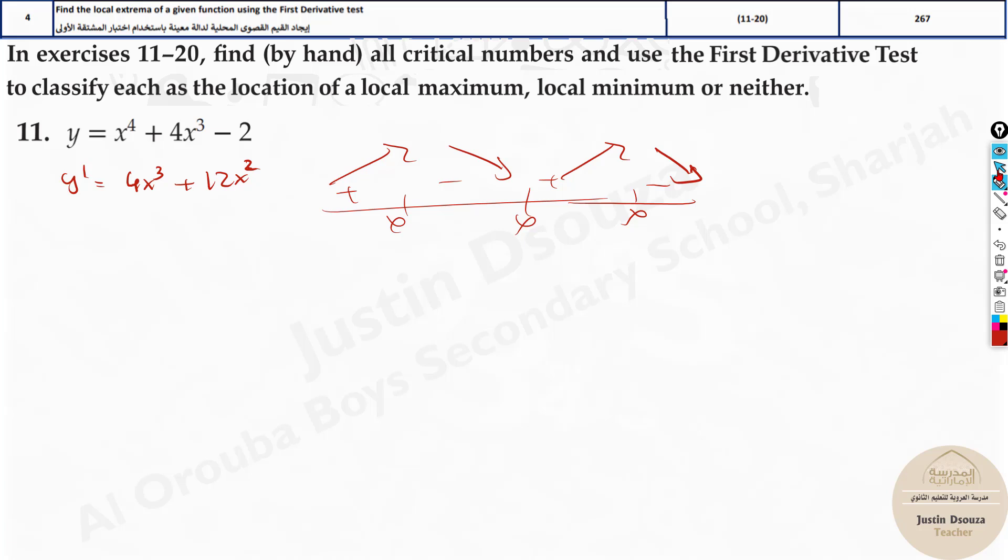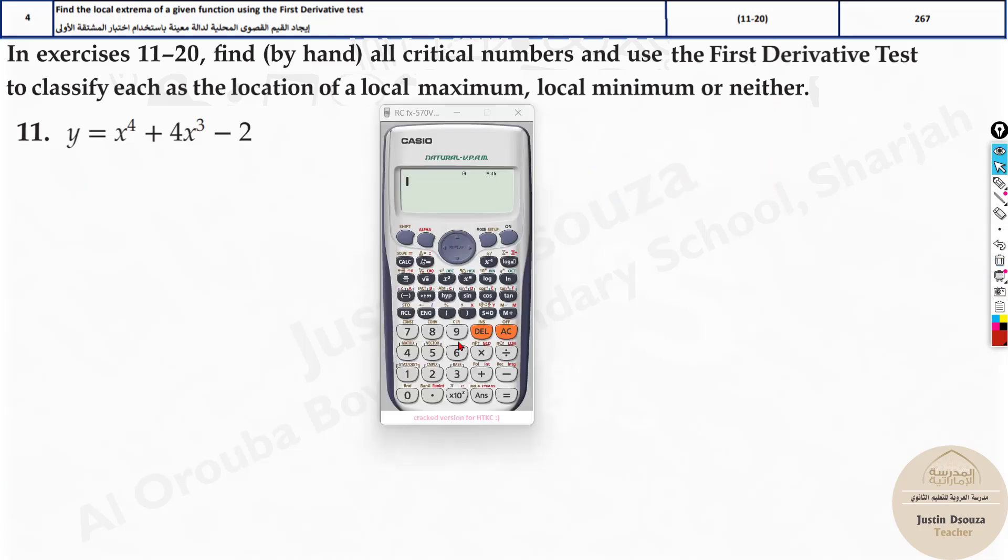But I'll try to tell you a shortcut method. Now that is absolutely actual method. Now since you will have the options with you, let's take our calculators. Let's press mode 7, that's the table, and type this equation out. Alpha x to the power 4 plus 4 alpha x cube minus 2. Now press equal to.